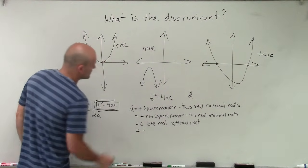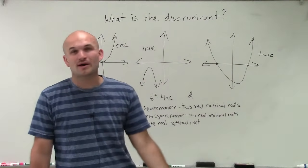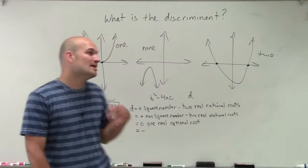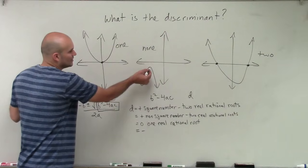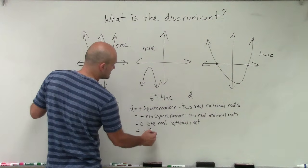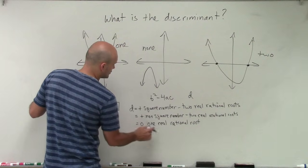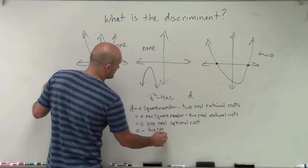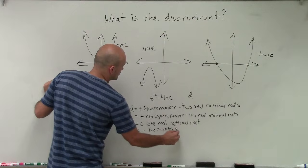And then what about if we have our discriminant is negative? It doesn't matter if it's a negative square number, a negative irrational number. As long as it's negative, you're not going to have any x-intercepts. So therefore, we say you're going to have two complex roots.